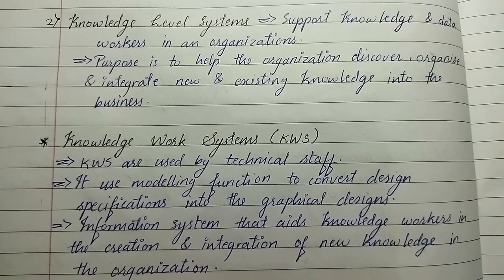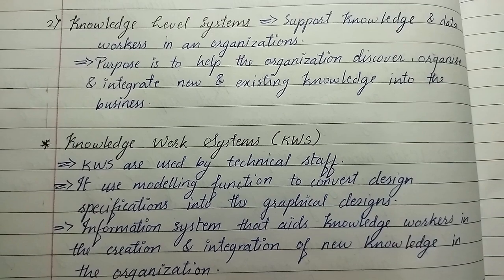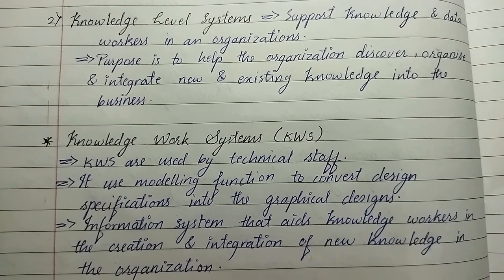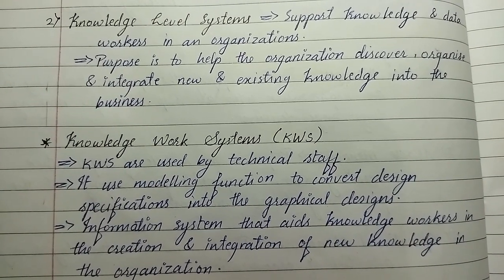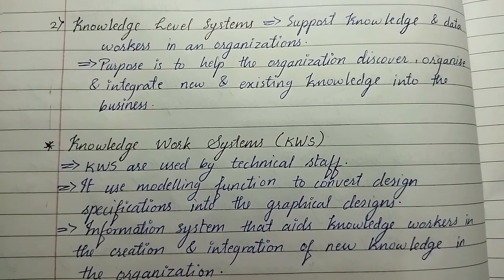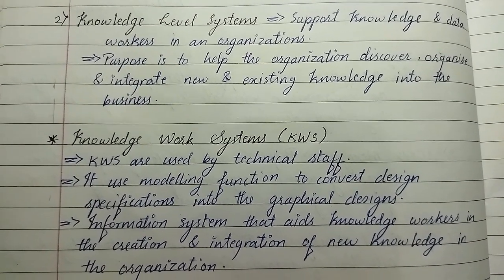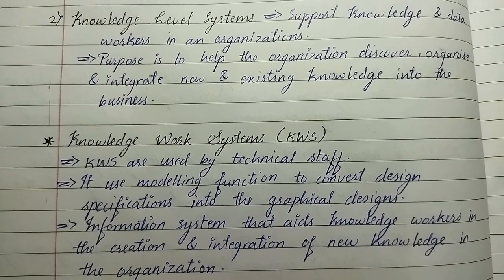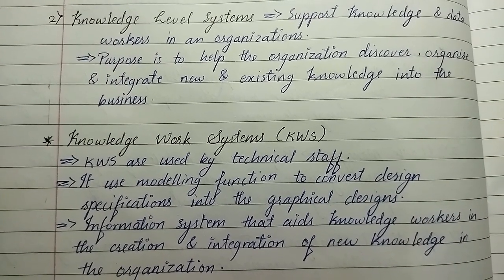The second is knowledge level systems. It supports knowledge and data workers in an organization, and its purpose is to help the organization discover, organize, and integrate new and existing knowledge into the business.